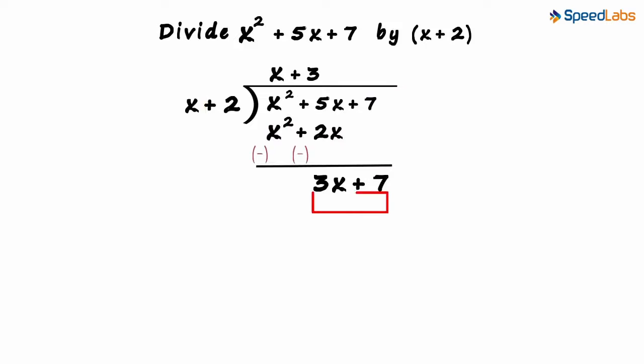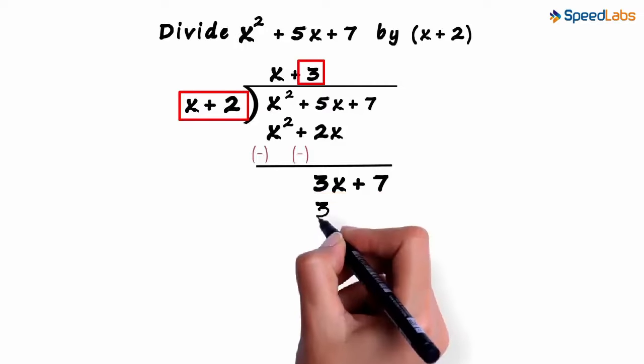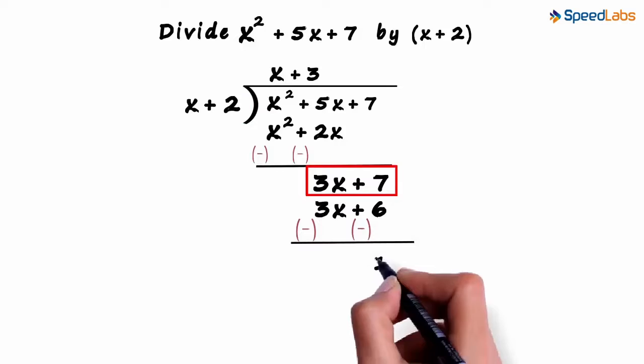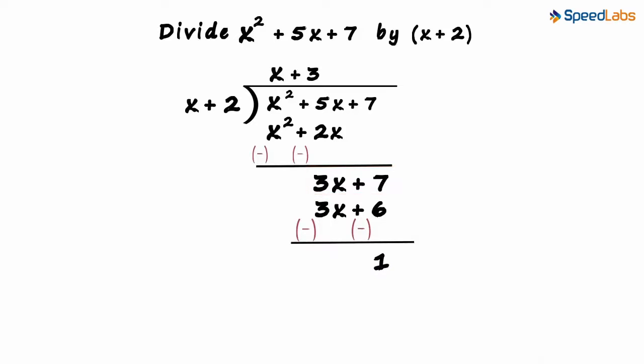To write the product here, we multiply 3 with the divisor. We get 3x plus 6 as the product. Subtracting it from 3x plus 7, we get 1 as a remainder.